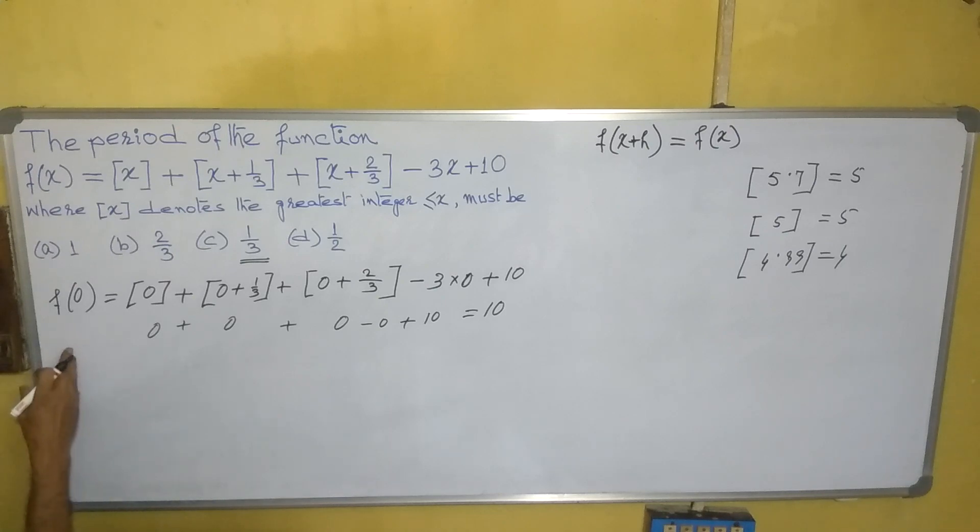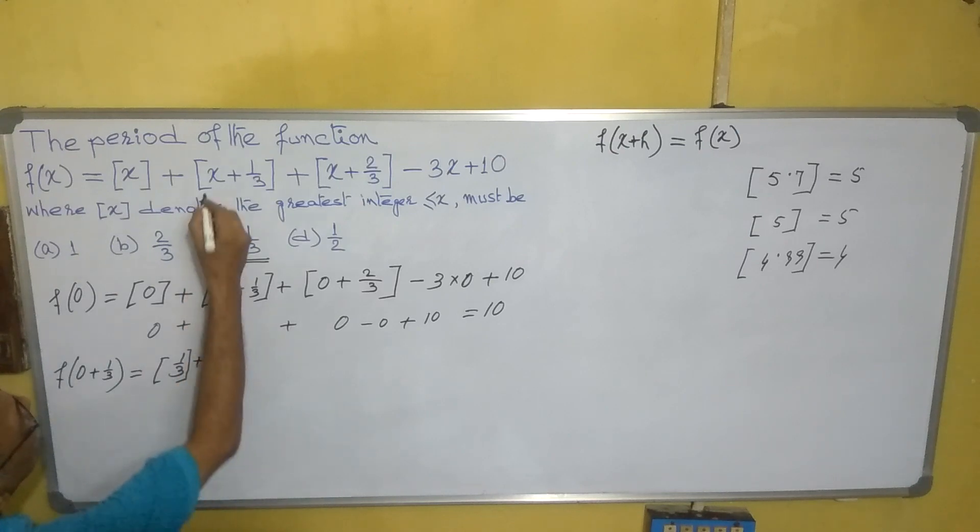f(0). If we are taking some other value, we will get some other answer. That will not matter. Now we will get f(0 + 1/3), that is f(1/3). That means [1/3] + [1/3 + 1/3], which is [2/3].